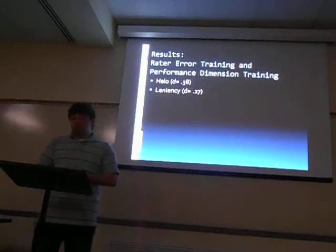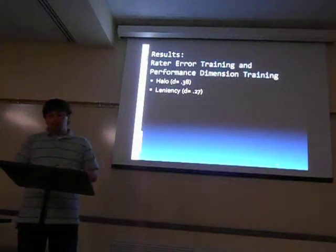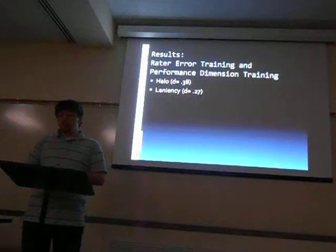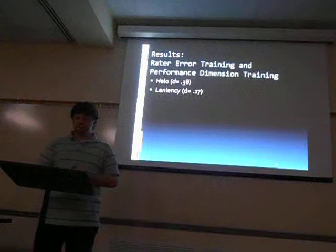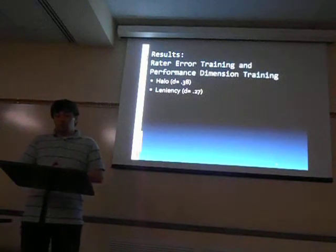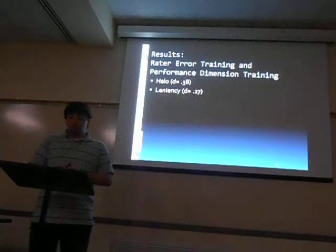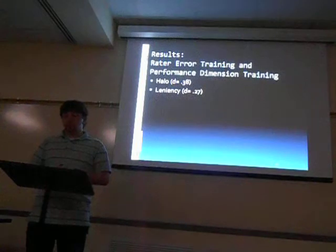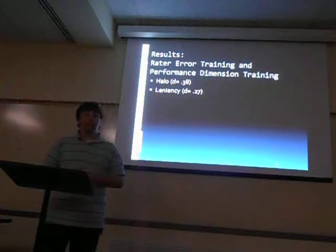For the combination of rater error training and performance dimension training, overall moderate effect sizes were found for reducing halo and leniency errors at 0.38 and 0.27 respectively. However, no data were available for rating accuracy or observational accuracy. These results tended to be a little bit higher than when rater error training is considered by itself.